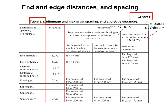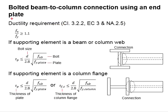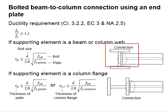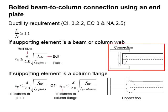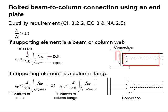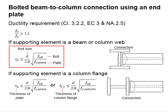For edge distance and spacing, Table 3.3 of Eurocode 3 Part 8 is to be referred. For checking ductility of the connection, in accordance with Clause 3.2.2, the ultimate tensile stress needs to be at least 10% higher than the specified yield strength. For the beam-to-column connection, the connection can happen at the web or at the flange, and the ductility requirement differs slightly depending on the connection type.